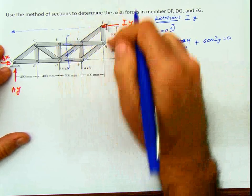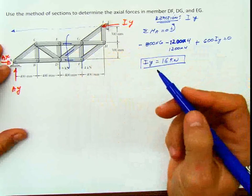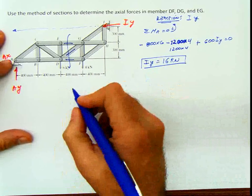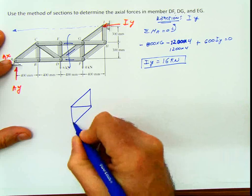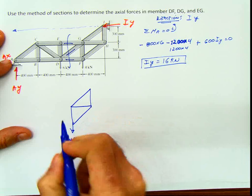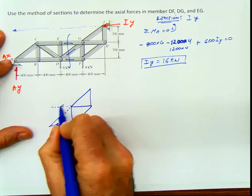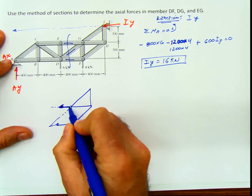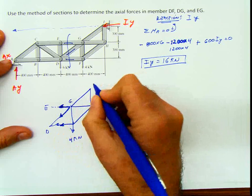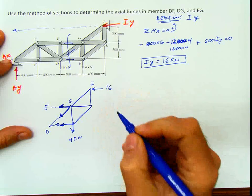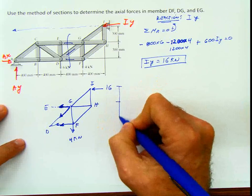I don't need to calculate reactions at A if I'm going to use just this side of the section. On this side I have three unknowns and three equations, meaning I can solve the problem by the method of sections without anything else. I have a force of 4 kilonewton on this part, and then from the cut section I have forces EG, DG, and DF. The joints are D, E, G, I, H, and F, with my reaction of 16 here. Distances are 300, 300, and from point D I have 400 and 400.